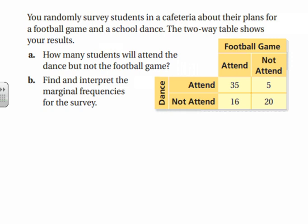Let's look at some examples. You randomly survey students in the cafeteria about their plans for a football game and a school dance — two questions, collecting data on both. The two-way table shows your results. We want to know how many students will attend the dance but not the football game, so we look for dance: yes and football game: no. Five students fall into that category.